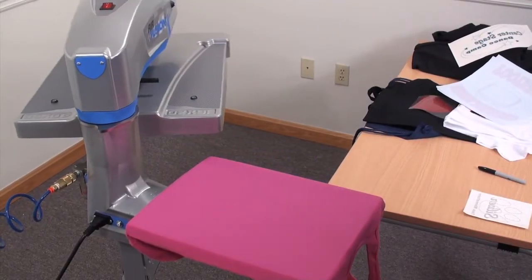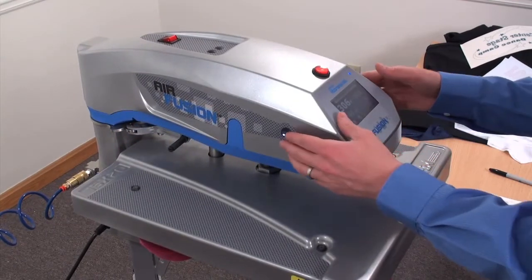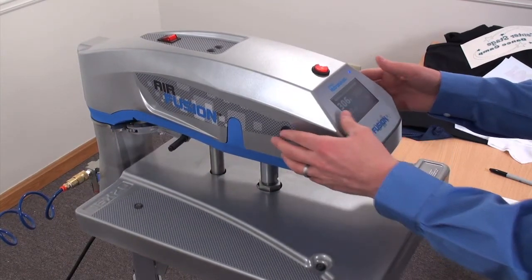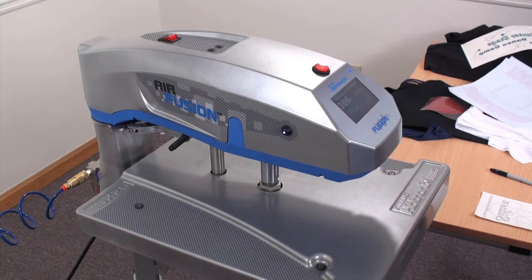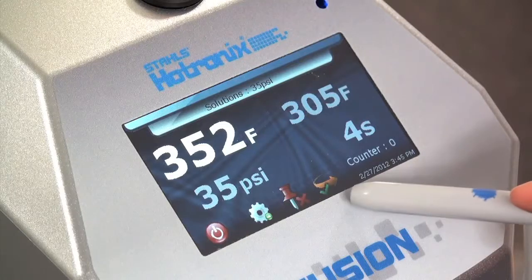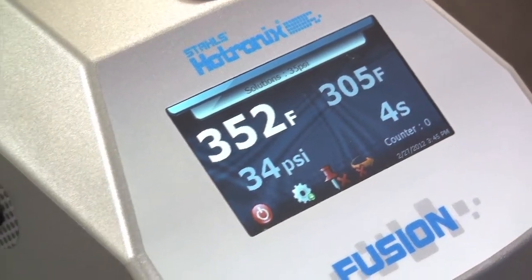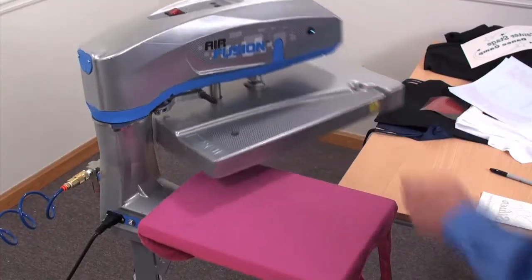Secondly, in the way of customizable operator preference is disengaging the auto swing away feature. While I prefer the fully automatic functionality, some may prefer a semi-automatic workflow and Hotronix realizes this. With the simple push of a button, an operator can disengage the automatic swing away feature of the press and swing away the press themselves.